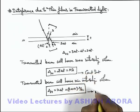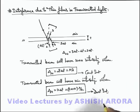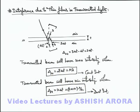And this was the condition for destructive interference we already studied in the previous sections. And under these conditions we can find out for which wavelength the transmitted beam will be having maximum or minimum intensities.